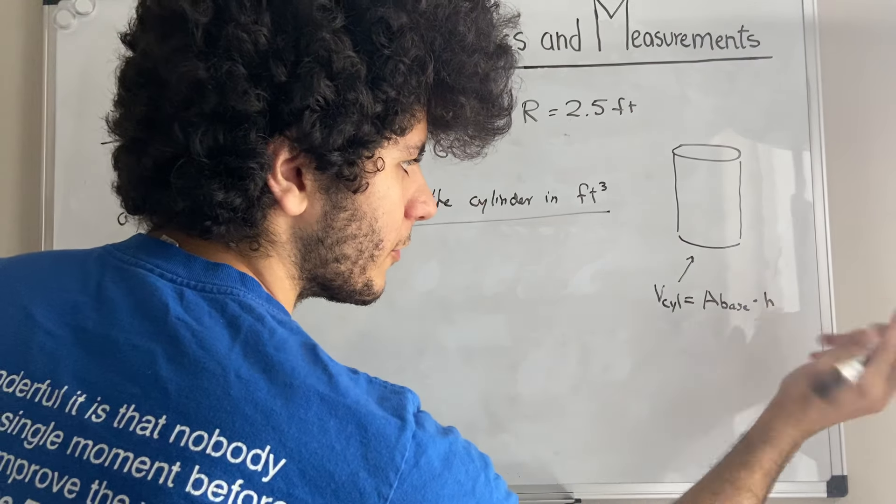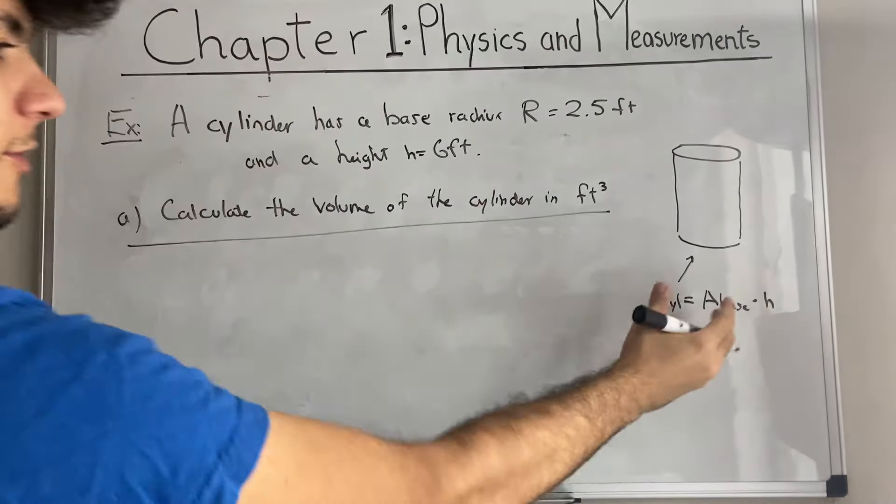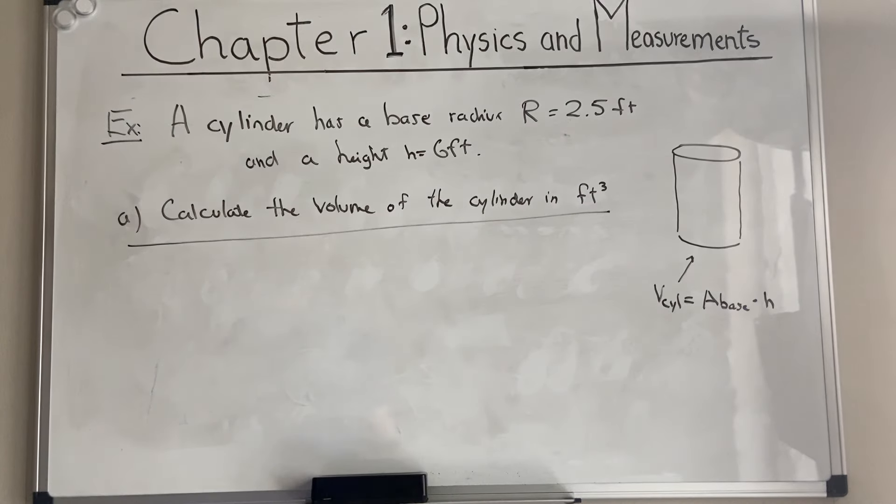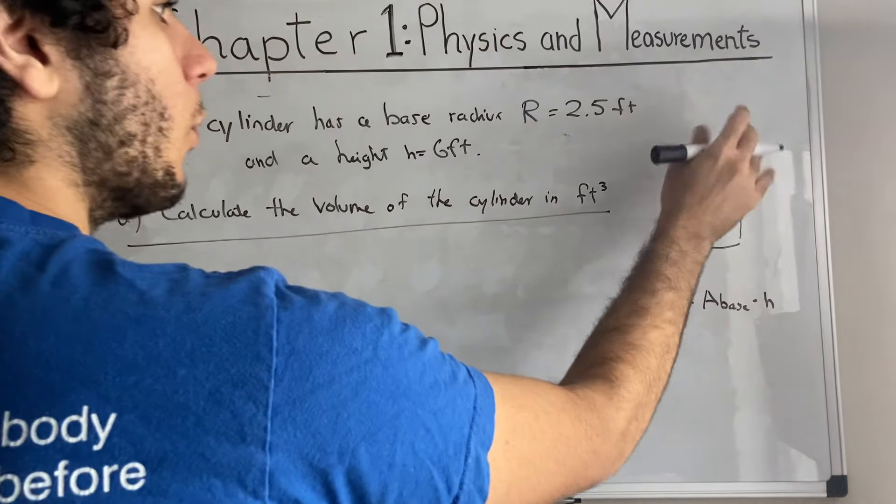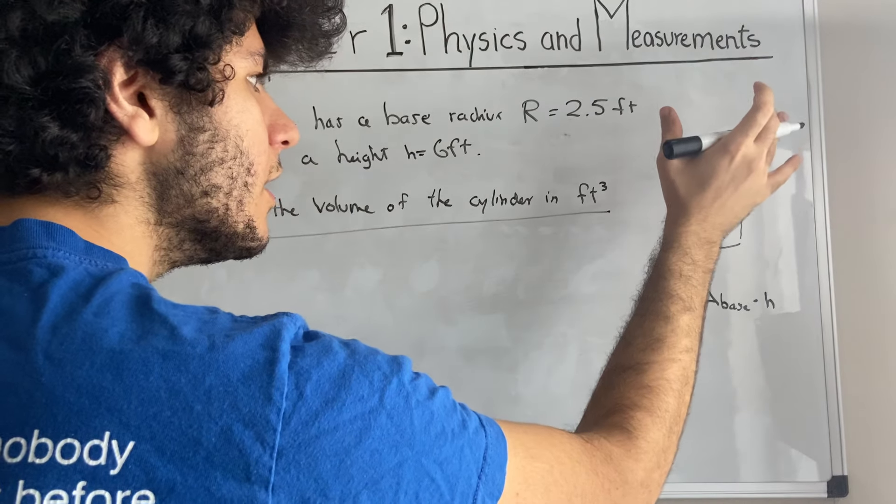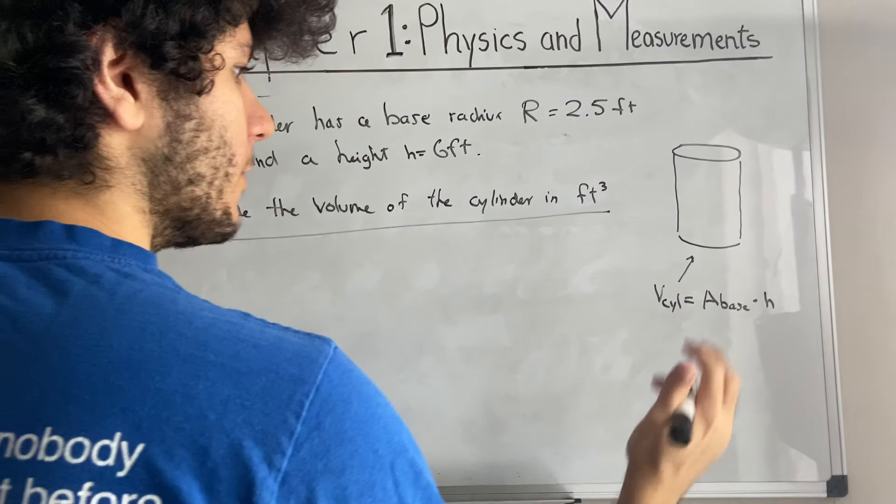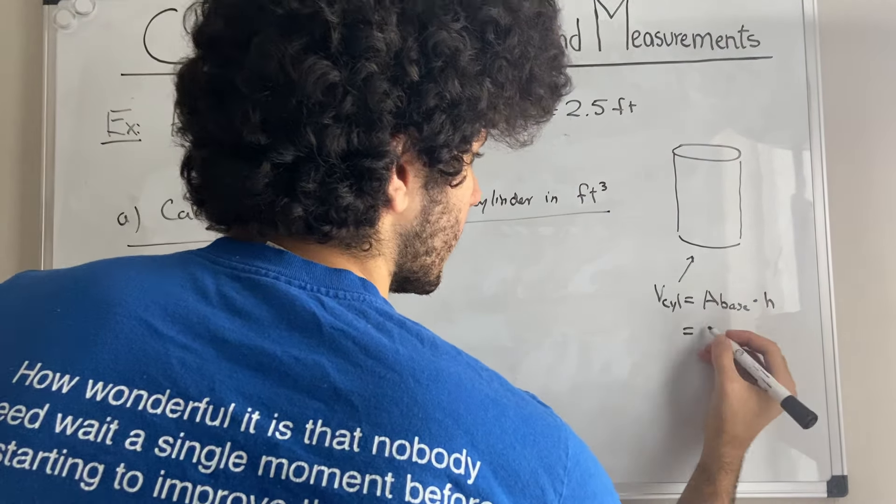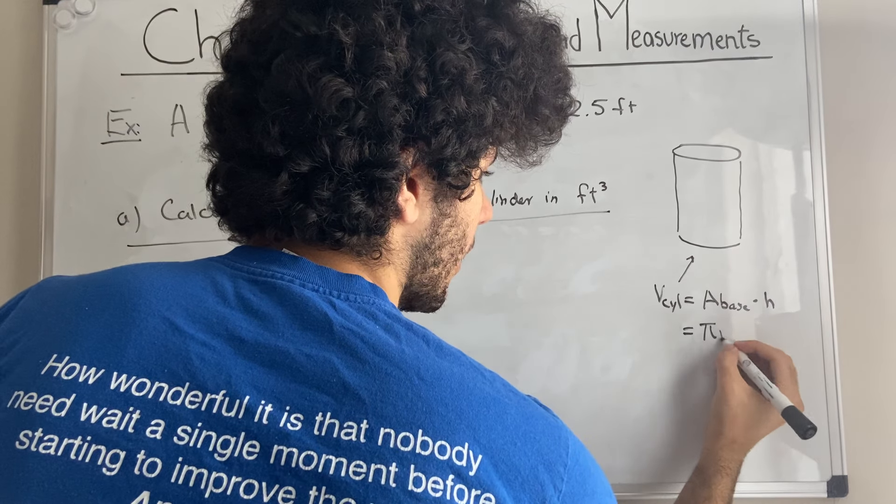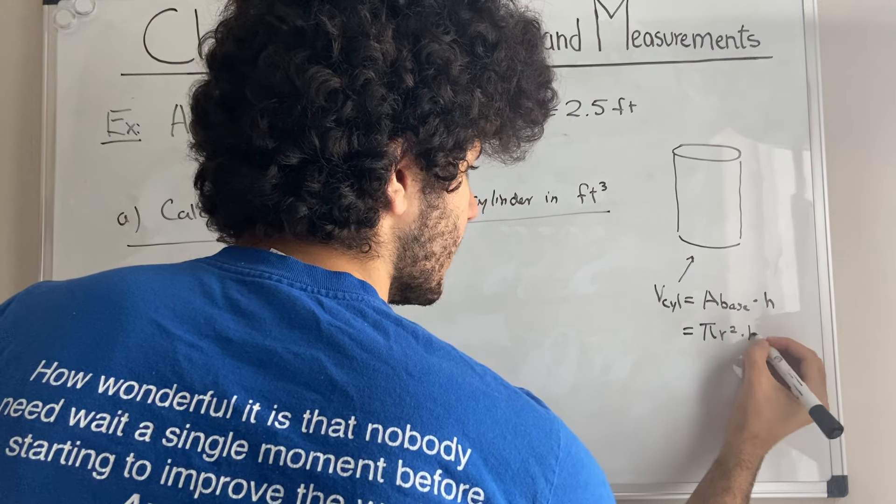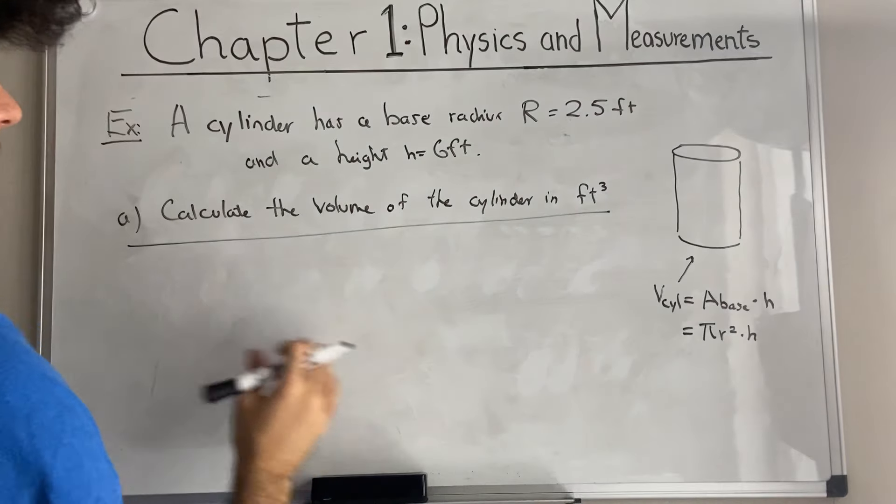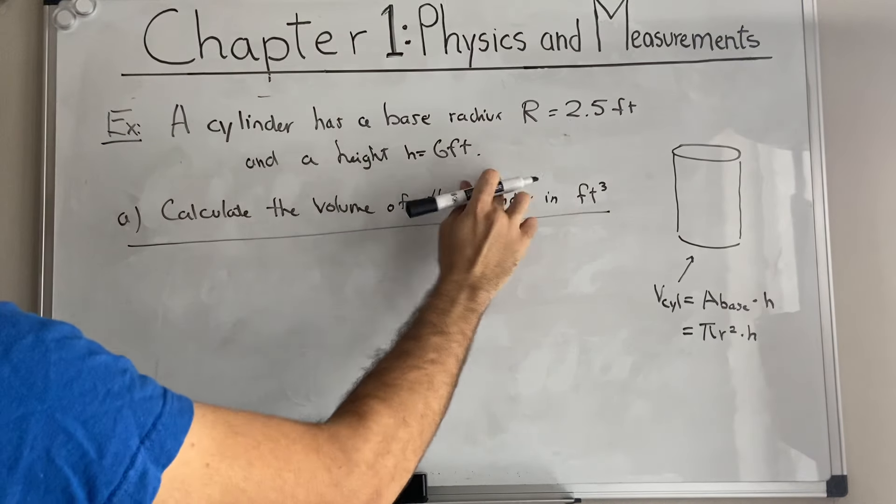If you remember what the formula for the volume of a cylinder is, it's pretty simple actually. It's basically the area of the base times the height. Volume of the cylinder is equal to the area of the base times the height. If you think about what the area of the base is, well basically, we have a circle over here. So it's basically pi R squared times H. And what do you know? We have radius and we have height. Therefore, we can just plug in our numbers.